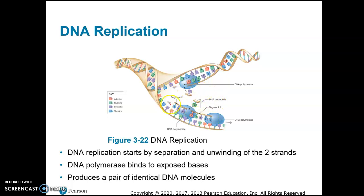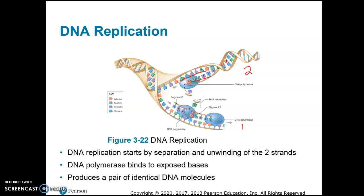The DNA is double stranded, so the two strands separate from each other — it unwinds and separates. DNA polymerase comes along and adds complementary bases to the old strand, so you end up with two new strands. Each new strand has one old template and one new strand created by the DNA polymerase, and we call that semi-conservative.